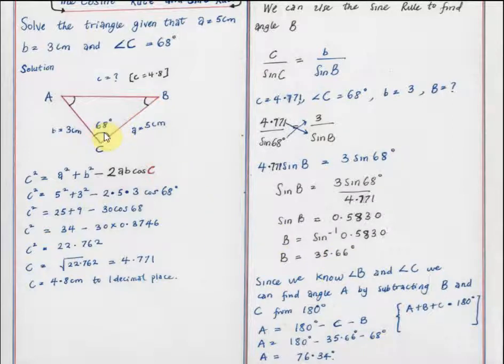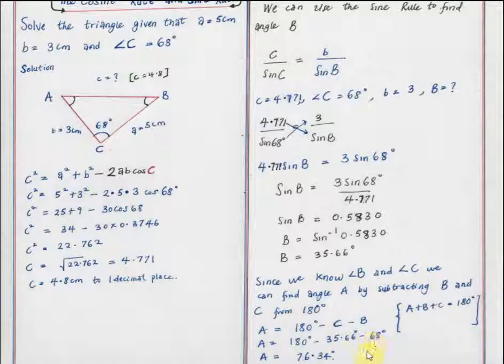So now we know angle B. We know angle C is 68. So to find angle A, we add these two angles together and subtract from 180 because the total sum of angles in the triangle is 180. So A equals 180 minus C minus B because A plus B plus C equals 180. So A equals 180 minus 35.66 minus 68. So A equals 76.34 degrees.